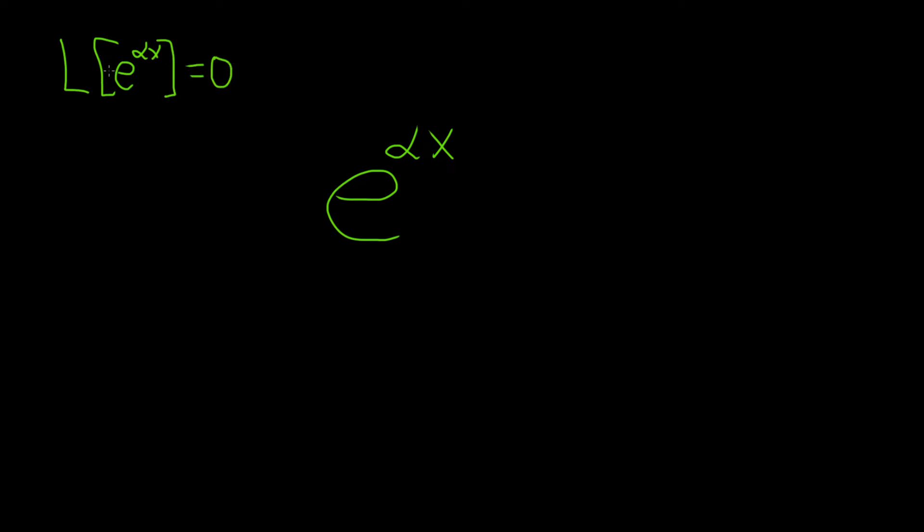Sometimes people use brackets to indicate that it's an operator. Sometimes people use parentheses. It's pretty interchangeable. We're going to use the differential operator. And so the answer is actually going to be, we're going to let L be equal to D minus alpha. So this will be the differential operator that annihilates this function.